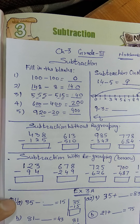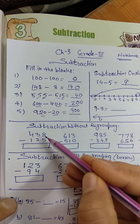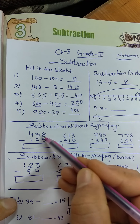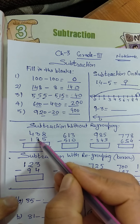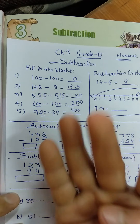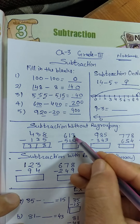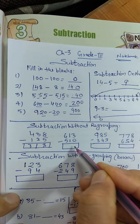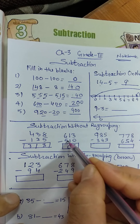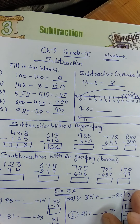In Class 2 you did subtraction without regrouping for 2-digit numbers. Now we will start for 3-digit numbers. Without regrouping means the bottom numbers are less than the top numbers. For example: 8 minus 5 is 3; 3 minus 2 is 1; 4 minus 1 is 3. Any number minus 0 is the same number; same number minus same number is 0. For example, 6 minus 5 is 1. The other parts you can do yourself.